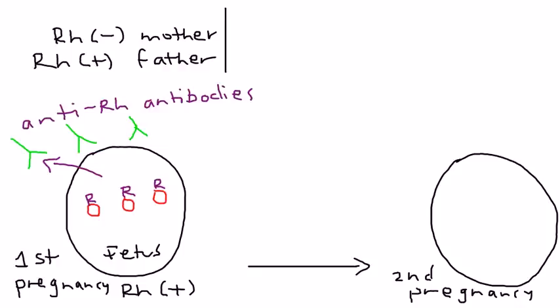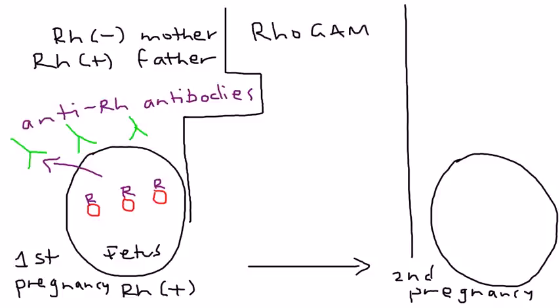Before we start talking about the second pregnancy, there's something that can be done to prevent the second pregnancy from having problems, and that is giving something called RhoGAM. What is RhoGAM? RhoGAM essentially is an anti-Rh antibody injection.